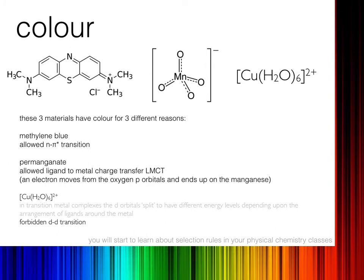To recap, we have colour here for three different reasons. Methylene blue has an allowed transition — an n to pi star and also a pi to pi star seen in the UV. The structures are very similar in the ground and excited states, so it has a high extinction coefficient — ultimately an electronic transition between different orbitals within the molecule. Permanganate has a ligand-to-metal charge transfer, usually shortened to LMCT: an electron moves from one of the oxygen p-orbitals onto the manganese, absorbing a little light as it does so. Finally, my copper complex has these forbidden d-d transitions, which I'll explain more later.